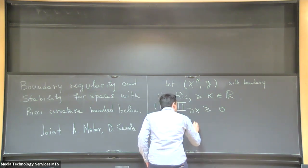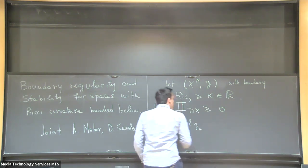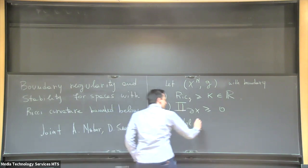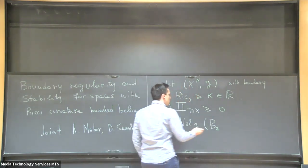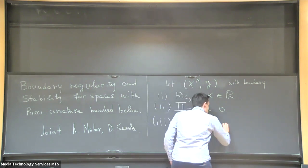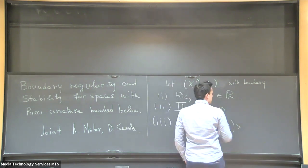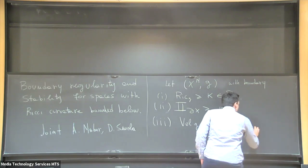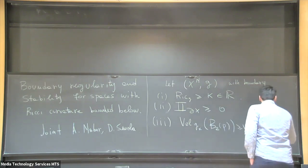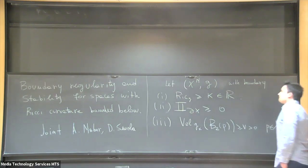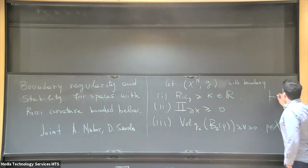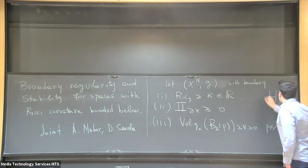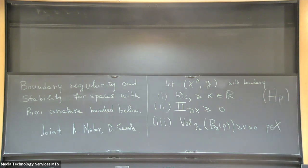The last assumption is a non-collapsing assumption. I'm denoting by the ball the standard volume measure associated to the metric G, and I'm assuming that the volume of any ball of radius 2 is bigger than a positive constant V, for any point x. I will often refer to these three assumptions as HP — they are our working assumptions.